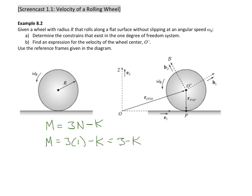In the problem statement, we can see this is a one degree of freedom system, meaning we can give it only one kinematic input — the angular speed of the body — which will make it roll to the right or to the left depending on whether the speed is positive or negative. For this to be a one degree of freedom system, k needs to equal 2, so we need to find two constraint equations.